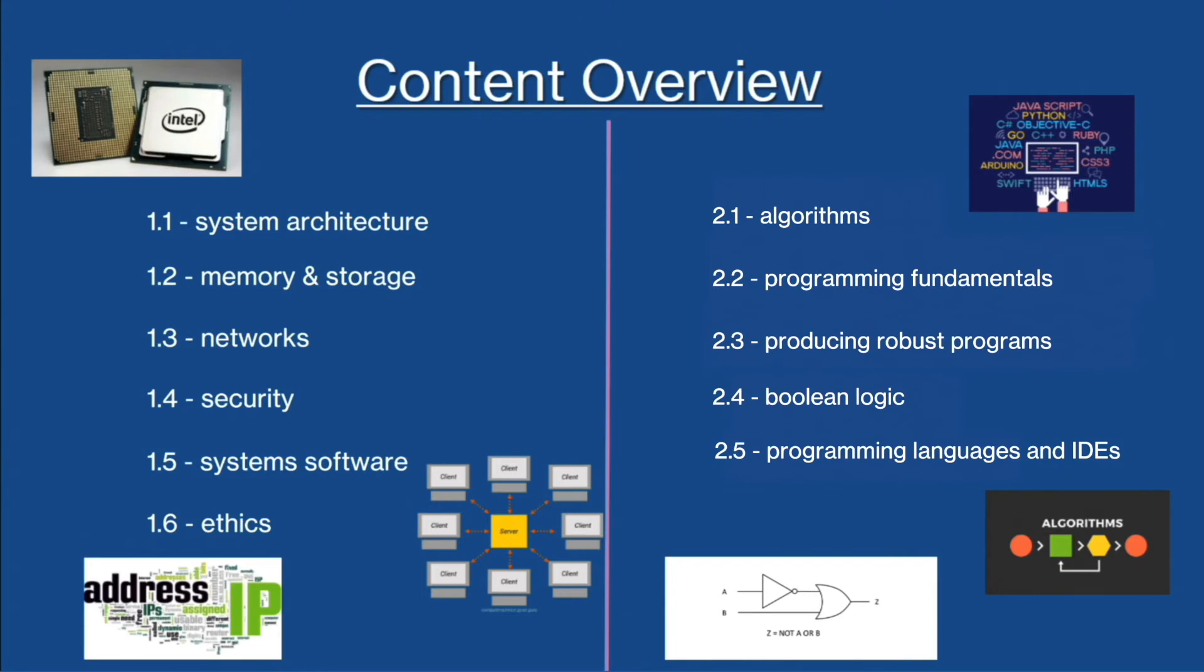Lastly for paper 1, the course covers system software such as utility programs, sound and images and the ethics surrounding computer science including legal, ethical, cultural and environmental ethics.